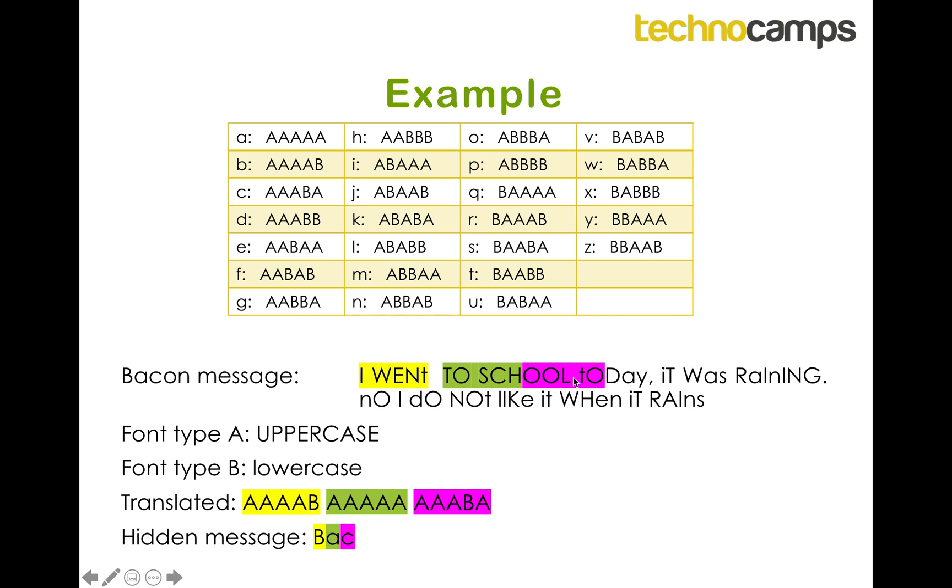So capital O, capital O, capital L, lowercase t, capital O, which is AAABA. We look for that in the grid, and we find AAABA is the letter C. So we repeat this over and over again, and eventually we've worked out the entire message, and we find out that the message BACON is good was hidden inside this boring message.